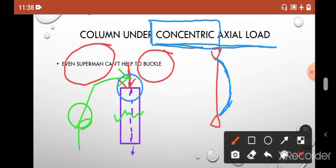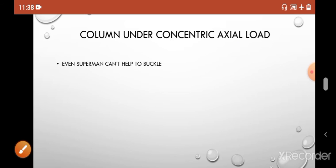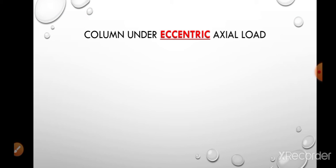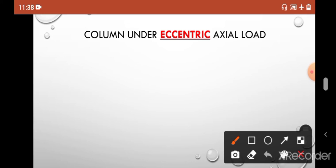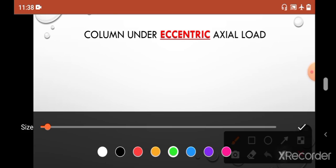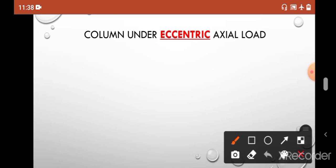So when will the column buckle and why? There are mainly two scenarios when your column will buckle. Let's first discuss the first case. The first case is when your column is under eccentric load. Previously it was under concentric axial load; now it is under eccentric axial load.